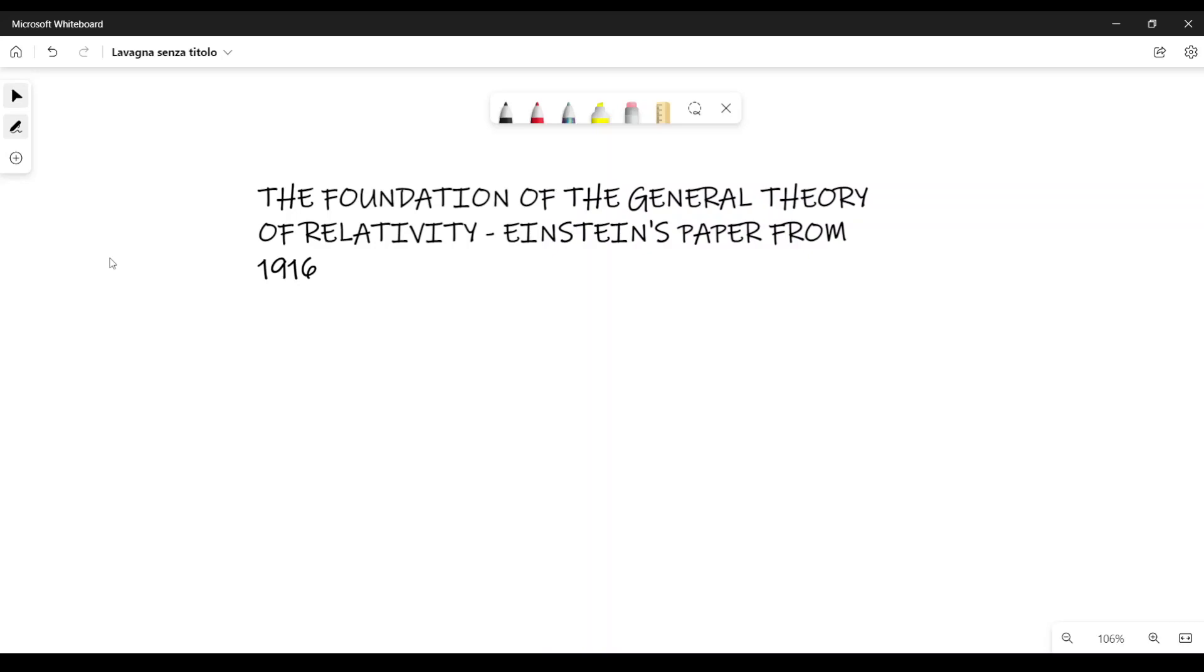We will extract one page from this paper, and in particular, I want to show you how Einstein derived the fact that the inverse of the metric tensor is actually a tensor. First,